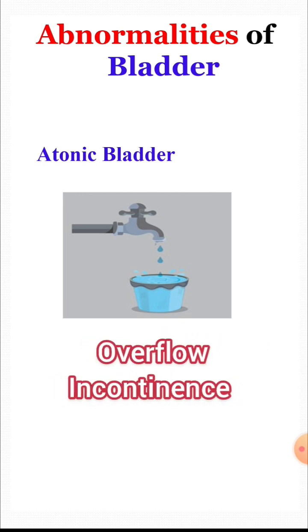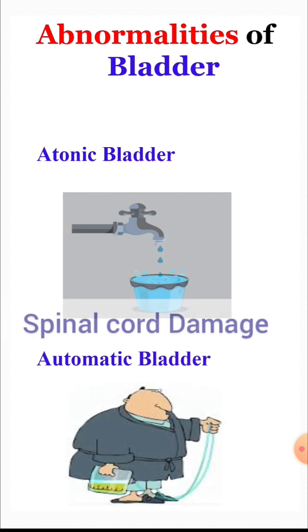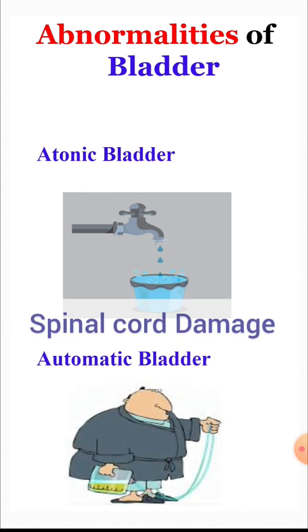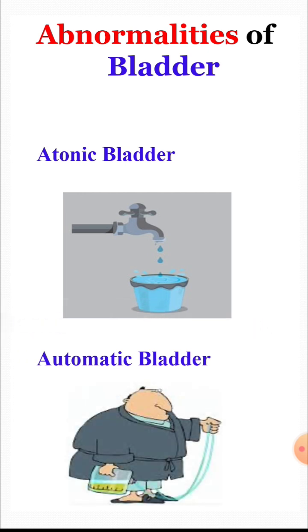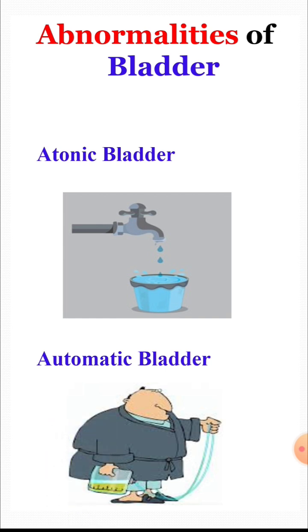The next neural abnormality is automatic bladder, which is caused by spinal cord damage above the sacral region, for example, in case of stroke or in case of road traffic accident. The effect is that after some time, the micturition reflexes revert back, but now urination occurs periodically and automatically on filling of the bladder.